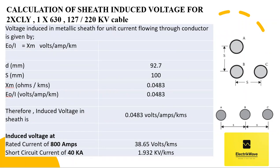As explained in the previous slide, the calculated induced voltage in the sheath based on the considered input is 0.0483 volts per ampere per kilometer. So the induced voltage for the rated current of 800 amperes would be 38.65 volts per kilometer, and at short-circuit current the induced voltage shall be 1.9 kV per kilometer. This will help to decide cable sheath voltage limiting requirements and size of conductor.